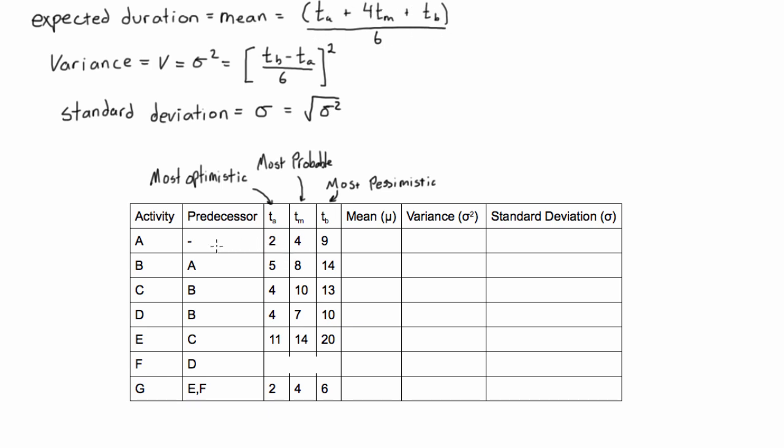So for the case for activity A, we would have 2, which is TA, plus 4 times TM, so 4 times 4. So here we can even do this in the case of activity A. Mean is TA, so we had 2 plus 4 times TM, so plus 4 times 4, plus TB, which is 9, and that is all divided by 6. So if you just punch that in your calculator, you'll get the mean is 4.5.